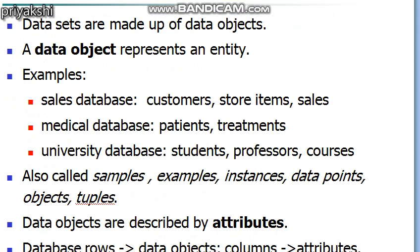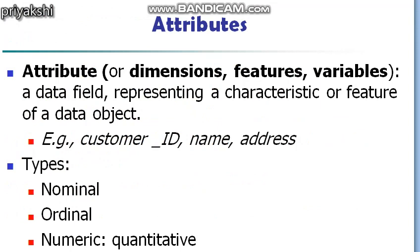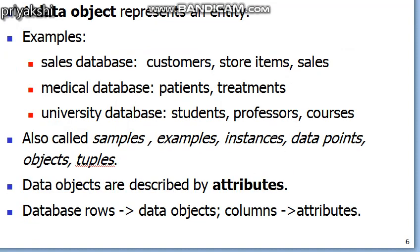Just as attributes are used to define an entity, data objects are also described by their associating attributes. We need to know the types of attributes a particular database contains. In a relational database management system represented in tabular format, rows generally represent the data points and columns represent the attributes. So data sets consist of data objects representing entities, and these data objects are defined by their associating attributes.